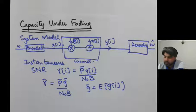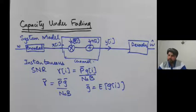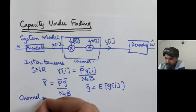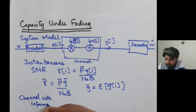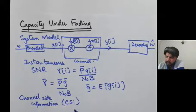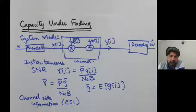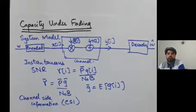This is our system model for capacity under fading. As noted, g(i) is the channel power gain, also called channel side information, or CSI. This CSI may or may not be available at the transmitter or receiver end. Depending on what is available at each end, the capacity of the wireless channel will differ. There are a number of scenarios under which you can compute the capacity of the wireless channel.